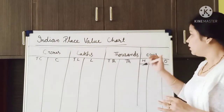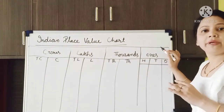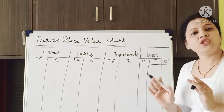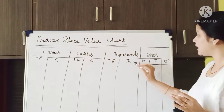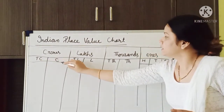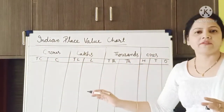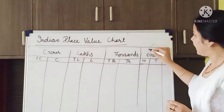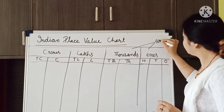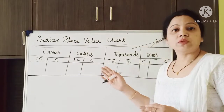Till now you have understood: first we have to form the periods, and the numbers will be grouped into periods. These are the places that we have already studied, and these are the periods. This is the Indian place value chart.